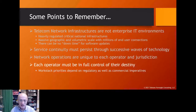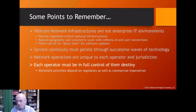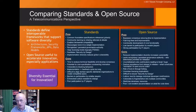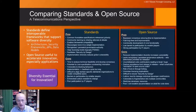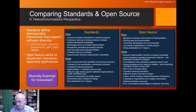Comparing standards with open source — what's the difference, what are the pros and cons? Standards are basically about specifications; open source is of course about code. Standards define interoperable frameworks — the network architectures we want to deploy — and support software diversity. Open source is absolutely critical to accelerate innovation, especially in applications. To me, open source and standards are completely complementary; it's not either/or.